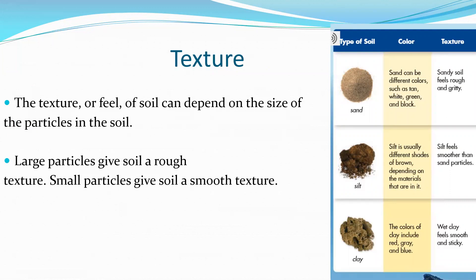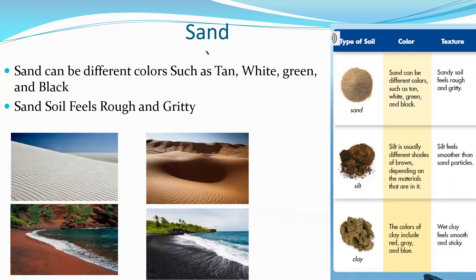The texture or feel of soil can depend on the size of the particles in the soil. Large particles give soil a rough texture; small particles give soil a smooth texture. Sand can be different colors such as tan, white, green, and black. Sand soils feel rough and gritty. These are different colors of real sand from around the world — notice how they're different colors.